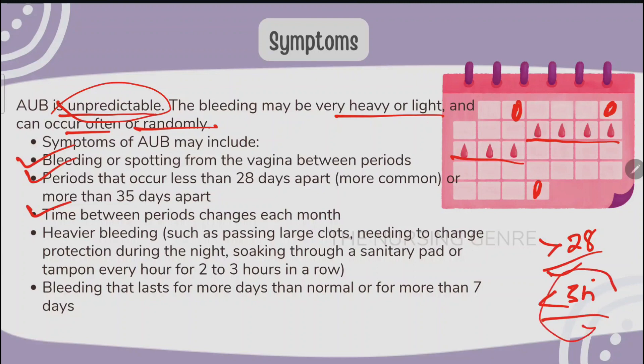Severe bleeding symptoms include passing large clots, needing to change protection during the night, and soaking through a sanitary pad or tampon every hour for 2 to 3 hours in a row.